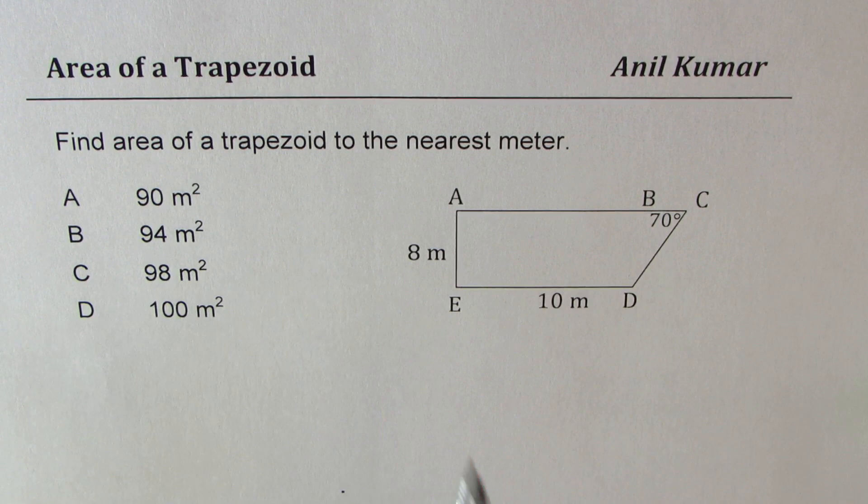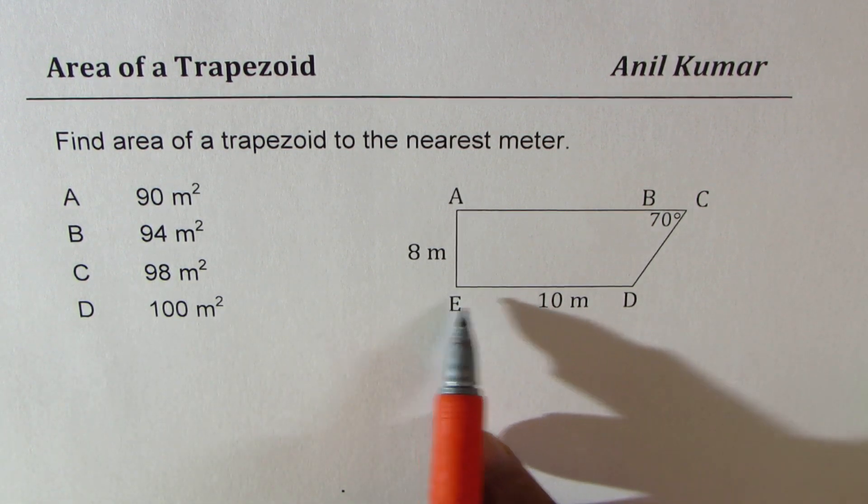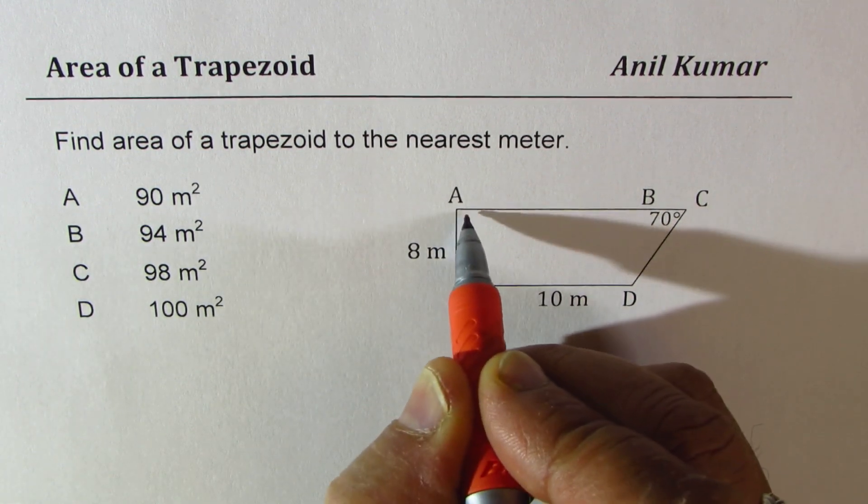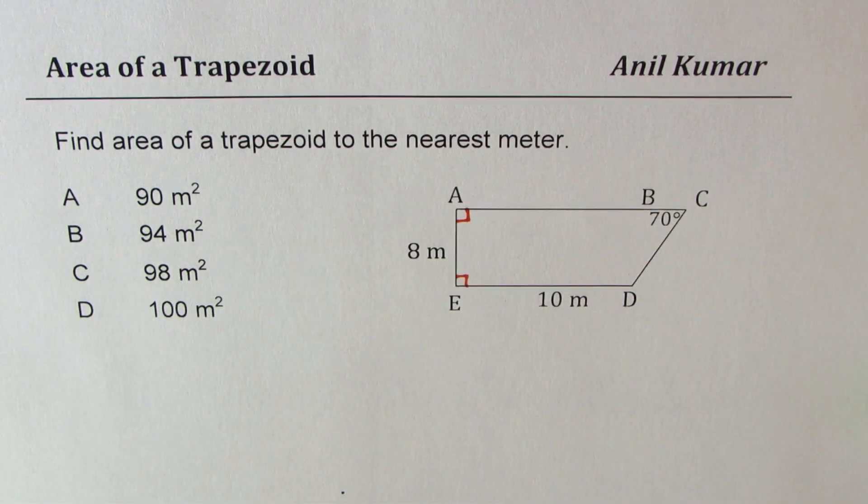Width is 8 meters and this one side ED is 10 meters. These two are right angles. An angle at C is 70 degrees.